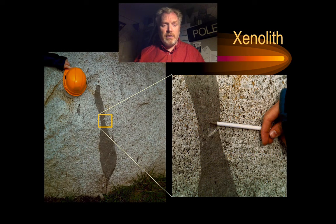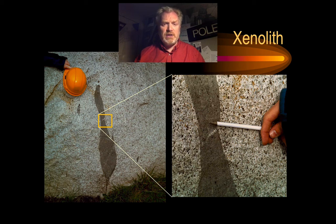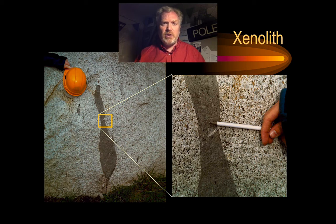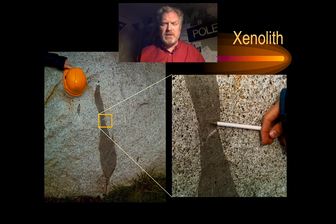We can find blocks of country rock that have fallen into the magma. Here we can see a dark piece of country rock that's fallen into a much lighter-coloured granite. These types of rocks are called xenoliths, which literally means foreign rock — but this will be the subject of a homework shortly, so I won't get into that in this lesson.